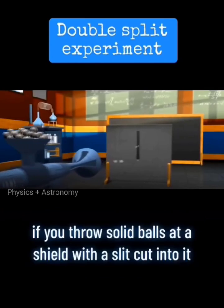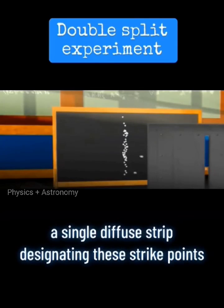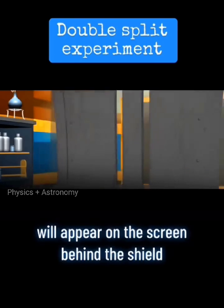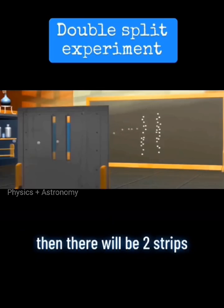If you throw solid balls at a shield with a slit cut into it, a single diffuse strip designating the strike points will appear on the screen behind the shield. If there are two slits in the shield, then there will be two strips.